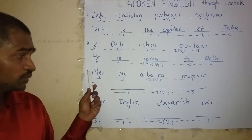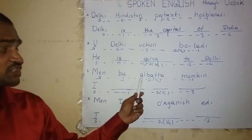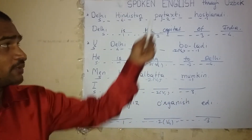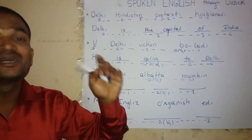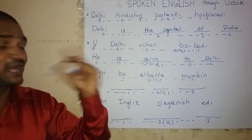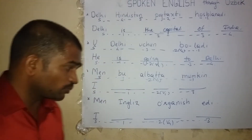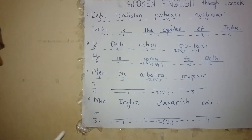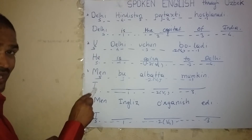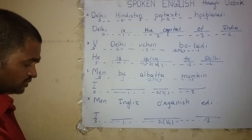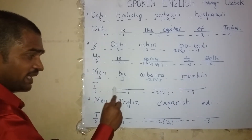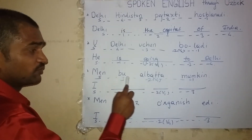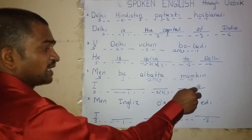Now, what should you do? Look at this Uzbek sentence — Men, bu albatta, mumkin — and try to speak it in English again and again, about 100 times. There is a comment box below. With your fingers, try to type the sentence. First write 'I,' then 'can' — C-A-N, then 'do,' then 'this' — T-H-I-S.